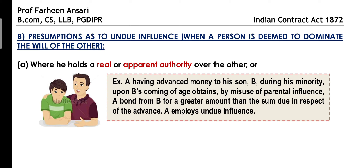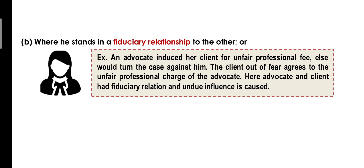There are some relations where the court presumes that undue influence was exercised, unless a contrary is proved. Point number one: if a person holds apparent authority or power over another person. For example, a father gave his son a loan during the son's minority; when the son became major, the father used parental influence to get the son to sign a bond for a higher amount. In this case, the father has apparent authority over the son, so it will be presumed that undue influence has been exercised.